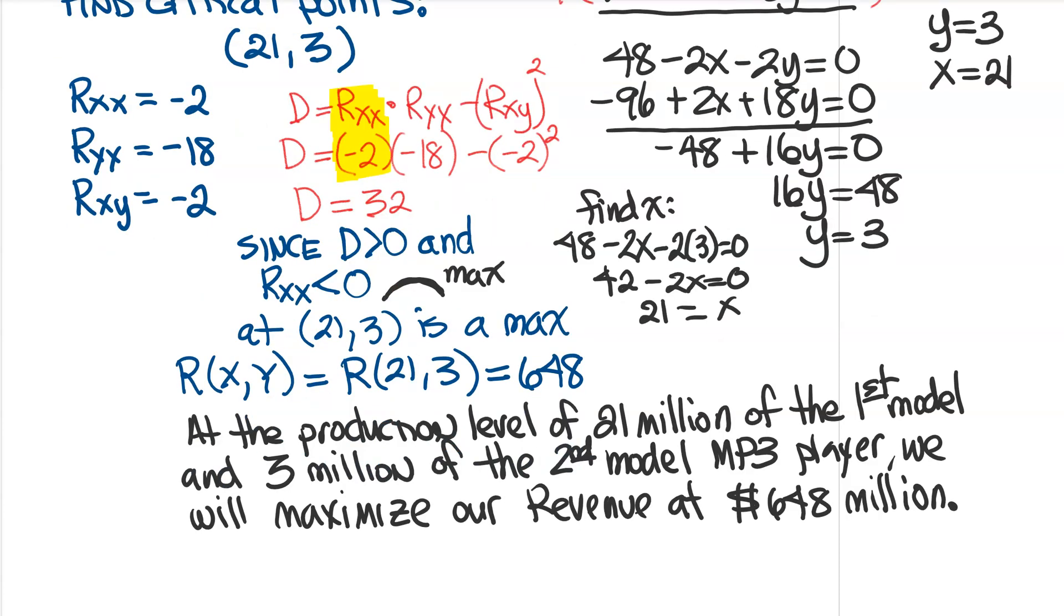Okay, so our final answer is this. At this production level of 21 million of the first model, 3 million of the second model, we're going to have a maximum revenue at 648 million.